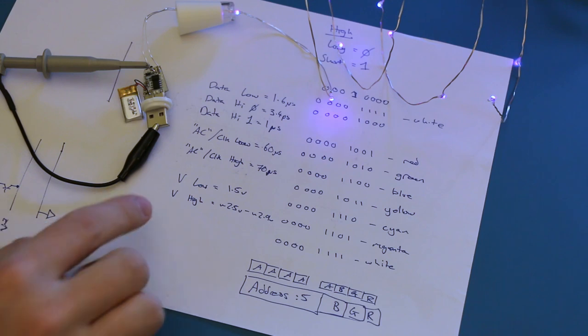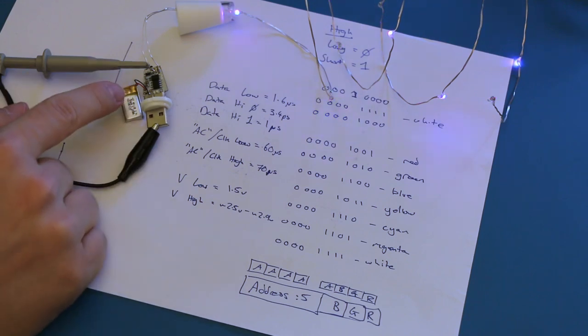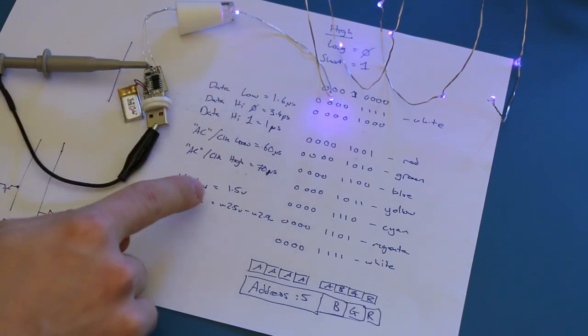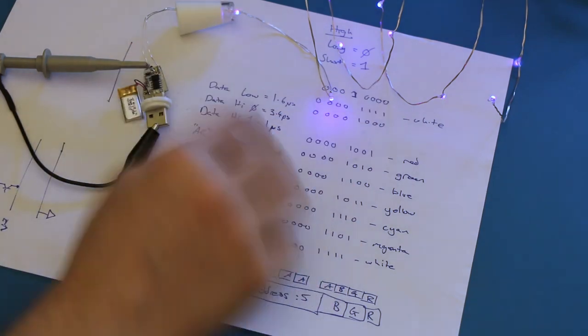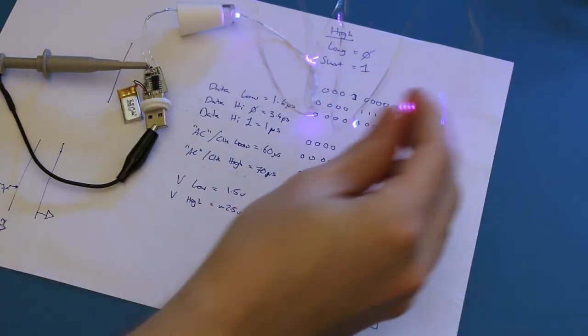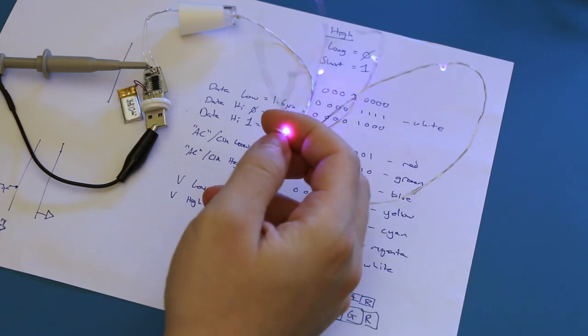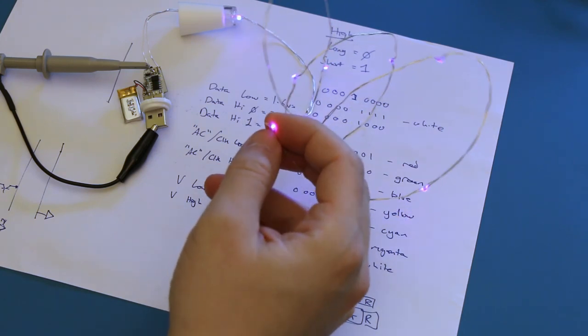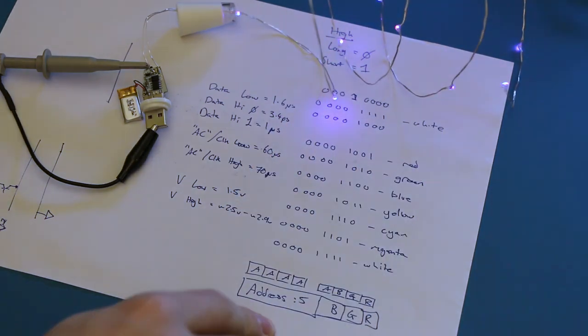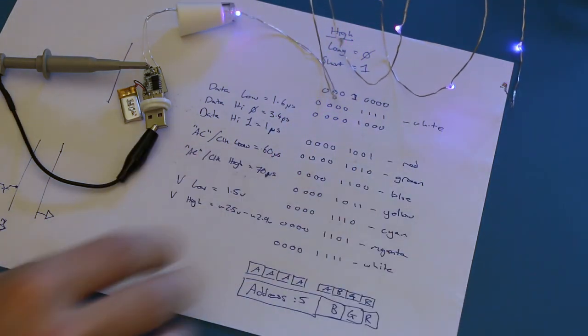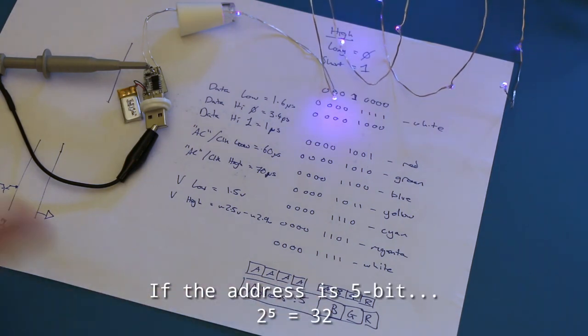I think we've now got all the information we need to reproduce a controller for this chain of LEDs. We've got the timing information, the voltage, as well as the protocol, which was a nice simple one to reverse engineer. Hopefully we'll get a new controller with some rainbow going, and if anybody has any ideas what these LEDs are, I did have a quick look, but not very thorough. It would be really interesting to hear. As I suspect there's a 5-bit address here, which means that you might have some interesting options for long chains of individually addressable LEDs. Thanks for watching, and see you next time!